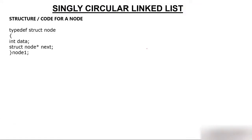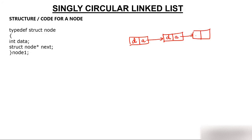For any linked list we have to create a node. For a singly linked list it's simply a node having two parts: one is data and one is address — the address of the next node, which is again a node having one data part and one address. In a singly circular linked list, the last node holds the address of the first node.